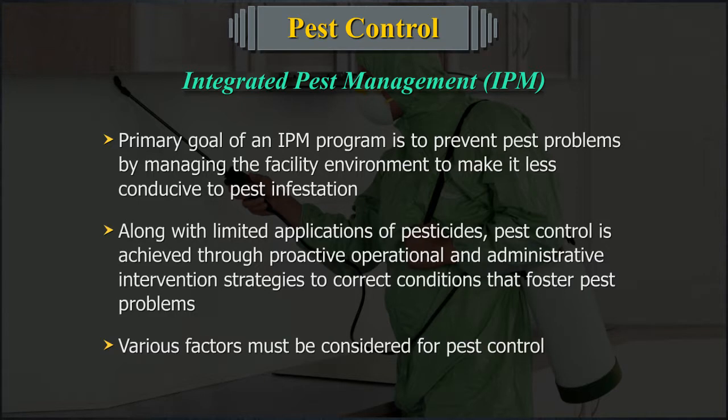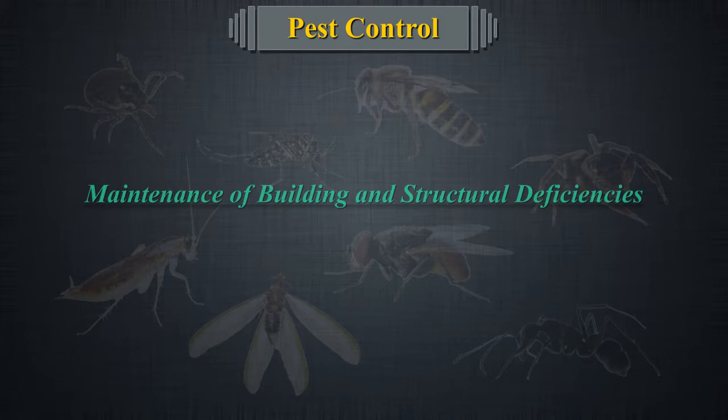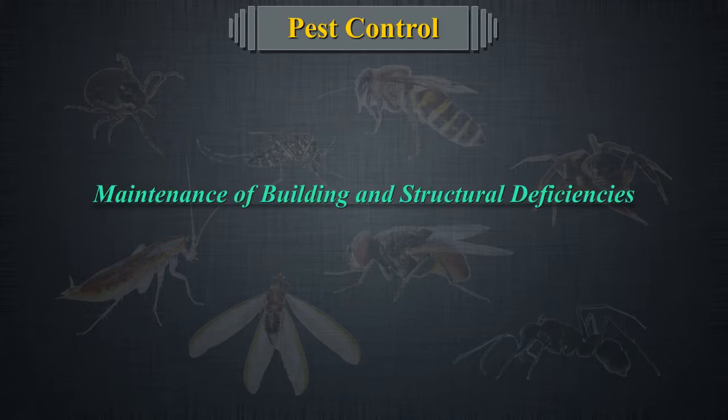Along with limited applications of pesticides, pest control is achieved through proactive operational and administrative intervention strategies to correct conditions that foster pest problems. Various factors must be considered for pest control, including structural deficiencies and poor building maintenance.